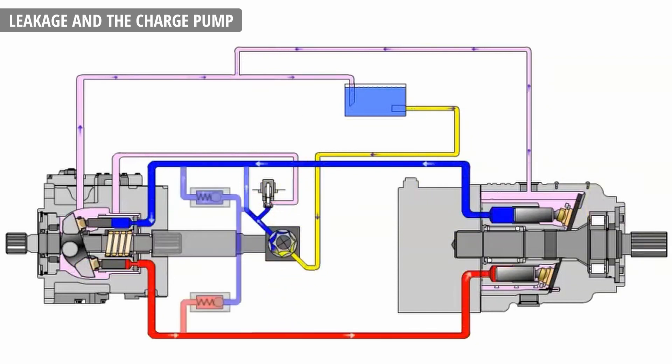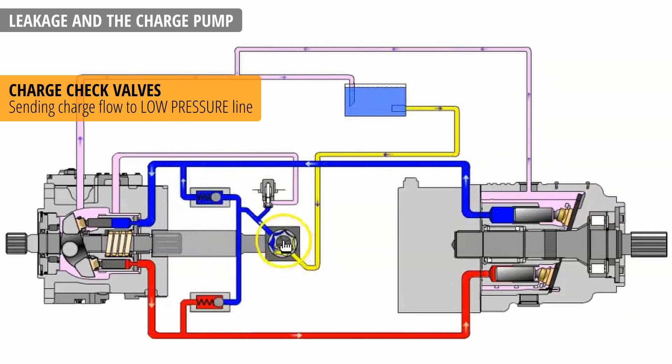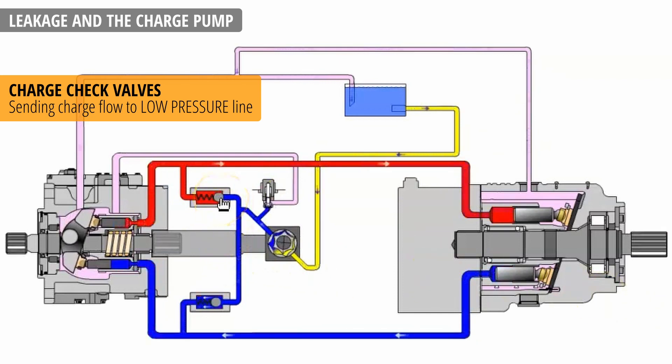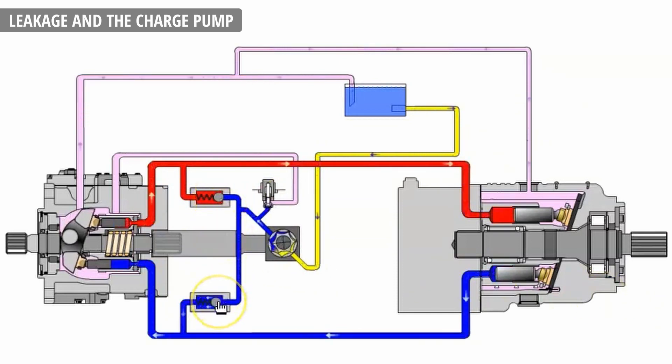This is where the charge check valves come in. They send the charge flow wherever is lower pressure in the line. Now if we push the joystick to the other side, the valve on the top will close and the other one will open, allowing the flow to the low pressure line on the other side.